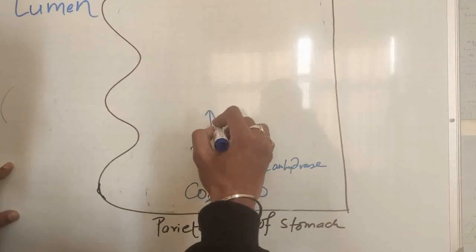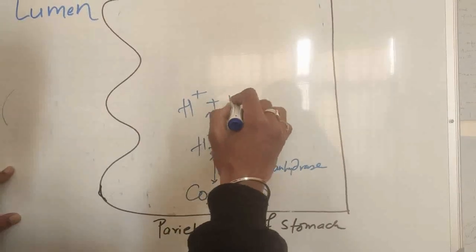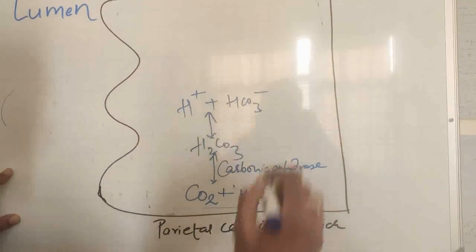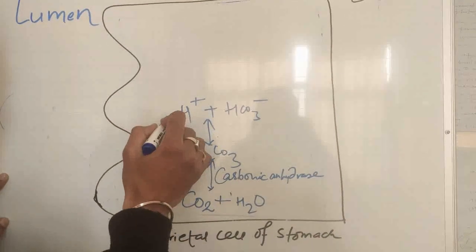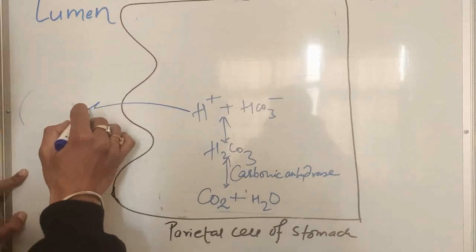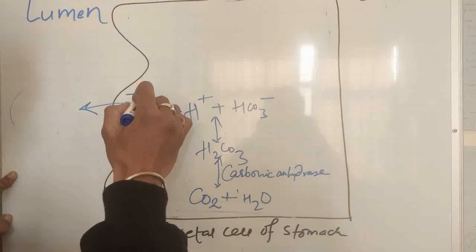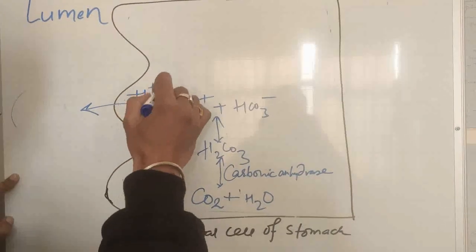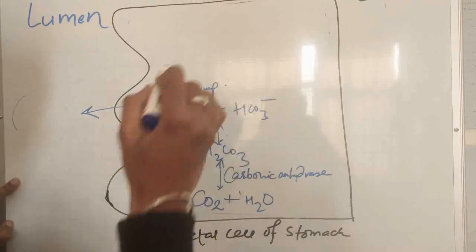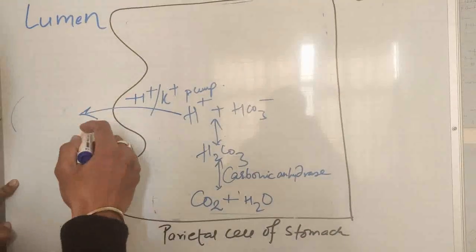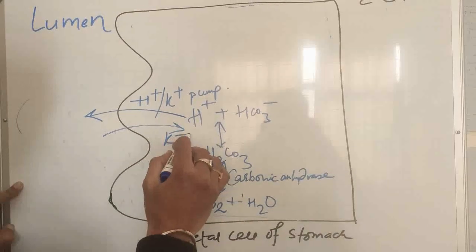It dissociates into H+ ion and bicarbonate ion. This H+ is pumped out to the lumen in the stomach with the help of a proton pump, which is basically a hydrogen-potassium pump. And while pumping this, it also pumps inside potassium ion.